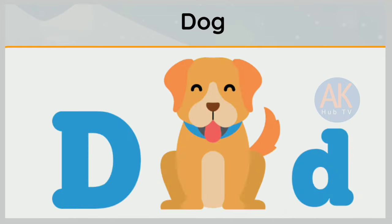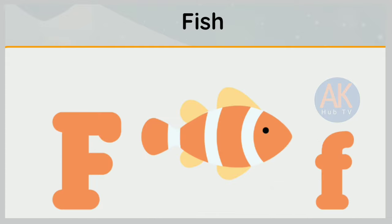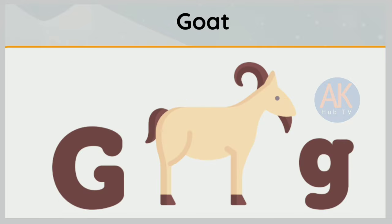D is for dog. D, d, dog. E is for elephant. E, e, elephant. F is for fish. F, f, fish.